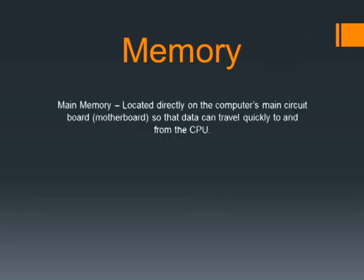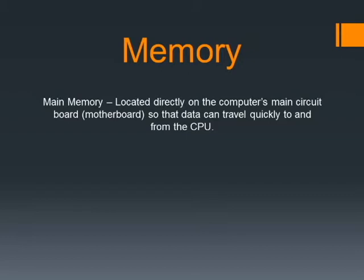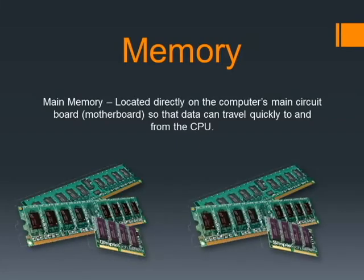Next is memory. The main memory is located directly on the computer's circuit board — what we'll later call the motherboard. It acts as a pathway that allows data to travel quickly between the CPU and memory. We'll be talking more about the motherboard in later videos. Here is a memory chip — a small component we'll cover in more detail later on.